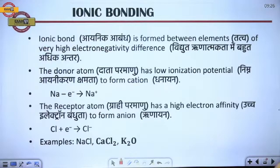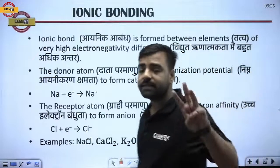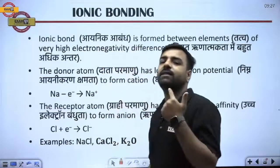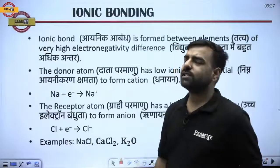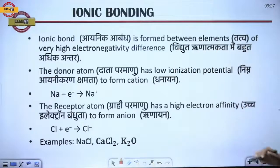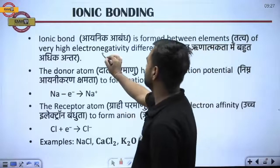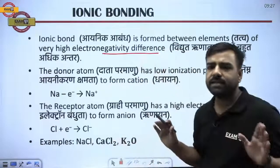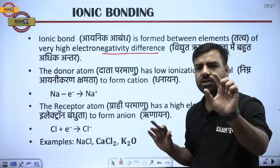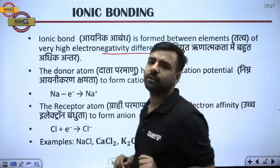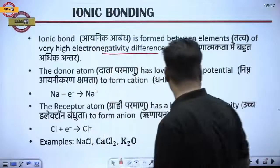Now, talking about ionic bonding — we are discussing three types of bonding: ionic, covalent, and coordinate. First, what is ionic bonding? An ionic bond is formed between elements of very high electronegativity difference. Before understanding this, we must know where metals and non-metals are in the periodic table, and what electronegativity means.